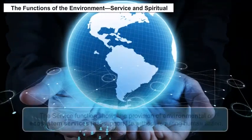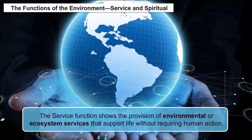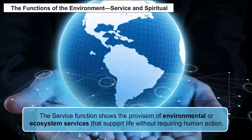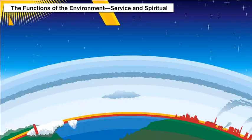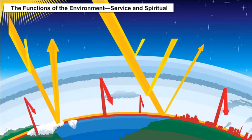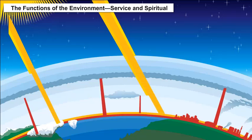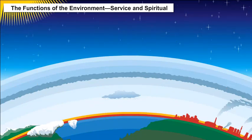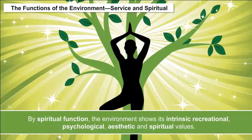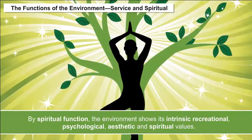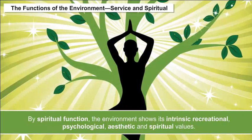Service and Spiritual: The service function shows the provision of environmental or ecosystem services that support life without requiring human action. For example, the Earth's natural greenhouse effect operates to ensure that the atmosphere holds the heat produced by incoming solar radiation during the day so we are able to keep warm at night — this is climate regulation. By the spiritual function, the environment shows its intrinsic, recreational, physiological, aesthetic, and spiritual values.